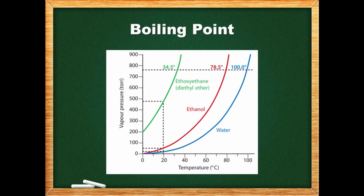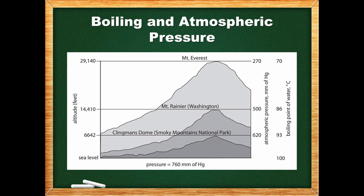Here's a plot of vapor pressure versus temperature for three different liquids: diethyl ether, ethanol, and water. The boiling points can be read off as the temperatures at which the liquids' vapor pressures reach atmospheric pressure, in this case 760 torr. All of these substances are liquids at room temperature since their vapor pressure is below 760 torr. If the atmospheric pressure is different, then the boiling point will be different. As altitude increases, atmospheric pressure drops and the boiling point of water decreases as well. If we were to boil food such as an egg, it would take longer since the water boils at a lower temperature. Pressure cookers work on the reverse — sealed steam raises the pressure inside, increasing water's boiling point and shortening cooking times.